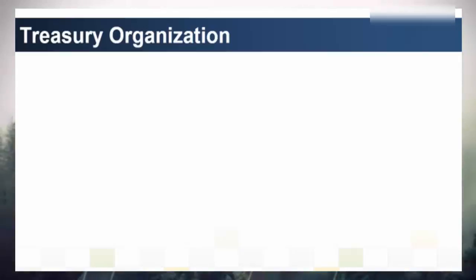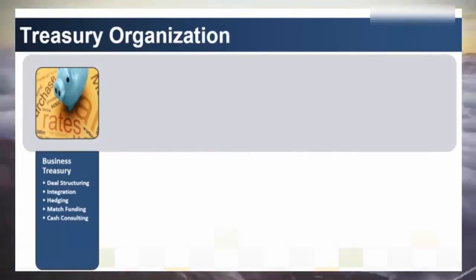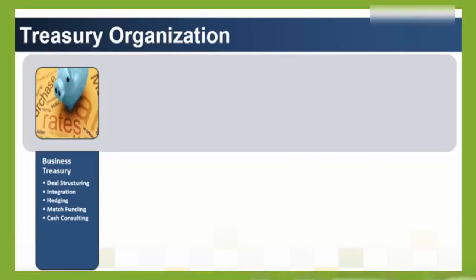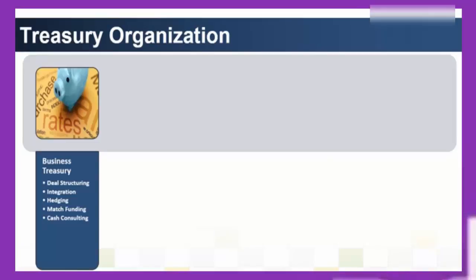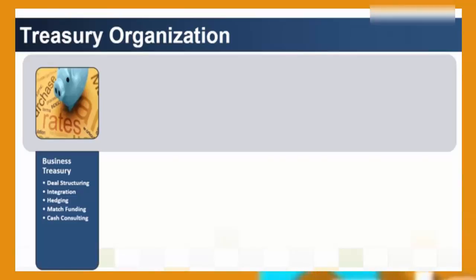How is the treasury function organized? Although there is no straightforward answer, this slide provides a generic view of the way large MNCs create departments or sub-functions within the treasury function. Centralization of treasury continues to be a clear trend and most organizations prefer a centralized treasury function. Treasury is mainly organized as a cost or service center and acts as a center of excellence in corporate finance. Business treasury often acts as the face to different business P&Ls within the enterprise, with responsibilities including deal structuring, hedging, match funding, cash consulting, and bank account management.